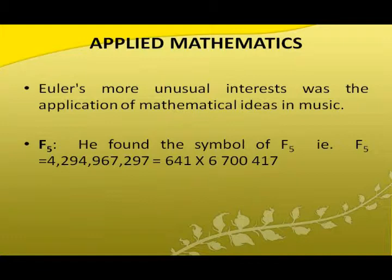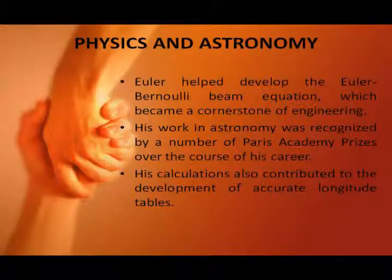Applied mathematics — F5: He found that F₅ = 4,294,967,297 = 641 × 6,700,417. Music: One of Euler's more unusual interests was the application of mathematical ideas in music. In 1739 he wrote the Tentamen Novae Theoriae Musicae, hoping to eventually interpret musical theory as part of mathematics.